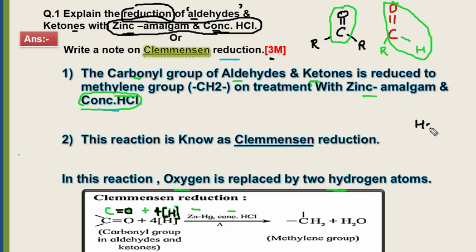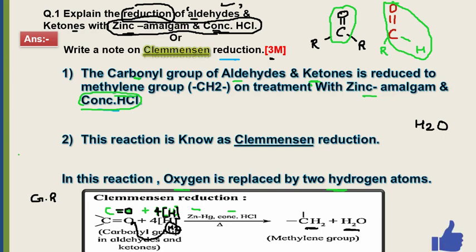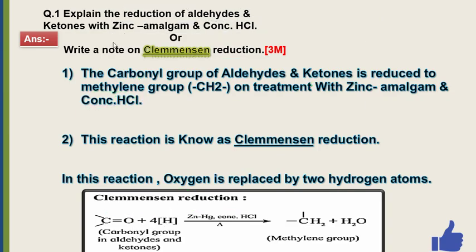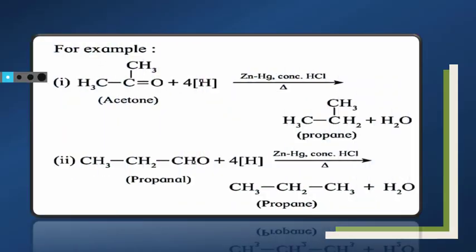H₂O ka formula dekhein — oxygen 1, hydrogen 2. Toh yahan 4 hydrogen mein se 2 hydrogen ne ek oxygen ke saath bonding karke water molecule bana diya. Aur jo bache hue 2 hydrogen hain, vo oxygen ki jagah carbon se jud gaye, toh methylene group mil jata hai. Yahi is reaction ka main concept hai. Yeh jo humne likha woh general reaction hai — ab specific examples dekhte hain.